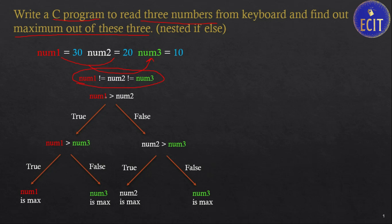Starting with num1 and num2: if num1 is greater than num2, we then check if num1 is also greater than num3. If true, num1 is the maximum number. If not, num3 is the maximum. Similarly, if num1 is not greater than num2, num2 is the bigger so far, and we check if num2 is greater than num3. If true, num2 is maximum; otherwise num3 is maximum. This is the simple logic.